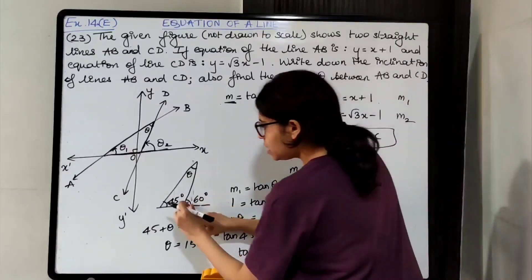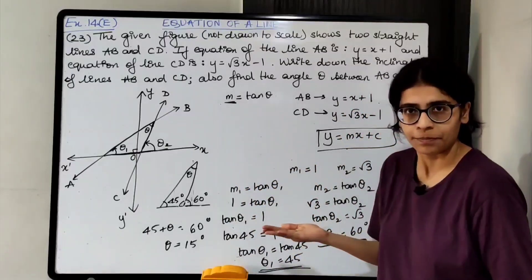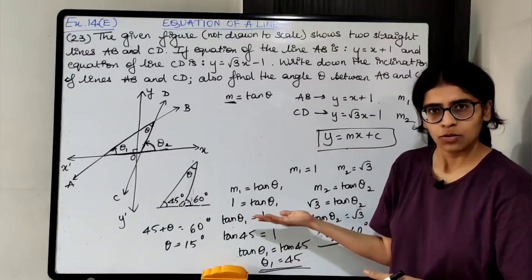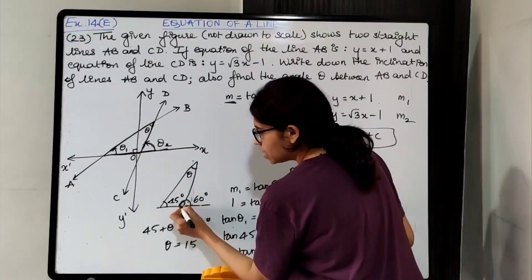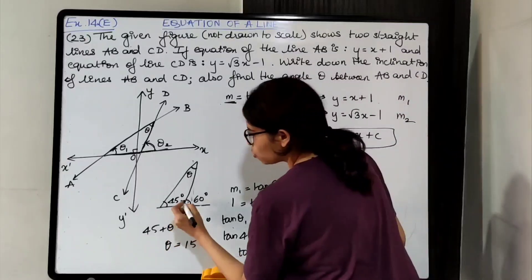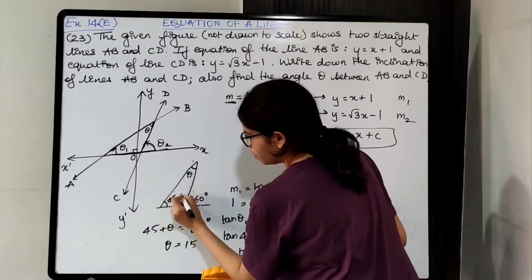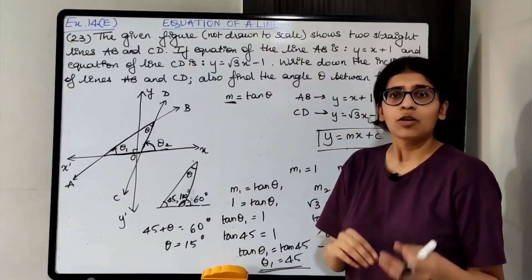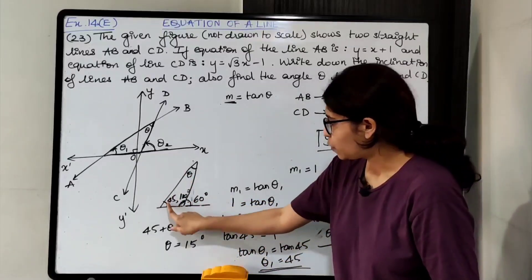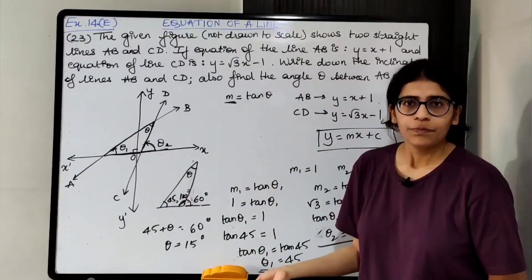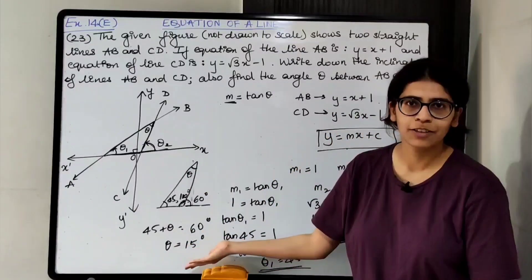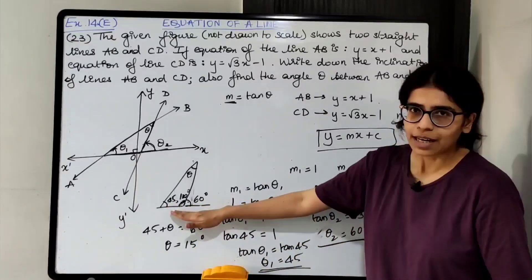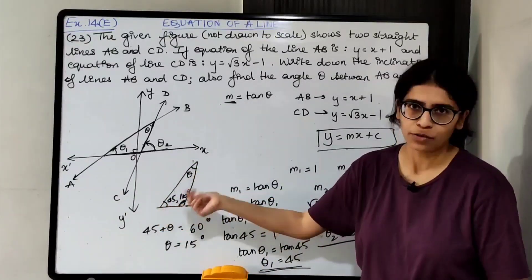Another method: the angle adjacent to theta 2 forms a linear pair, so it is 180° − 60° = 120°. Using the angle sum property of the triangle: theta + 45° + 120° = 180°, which also gives theta = 15°. You can use either method — both give the same answer. The exterior angle property is the easier and shorter approach.